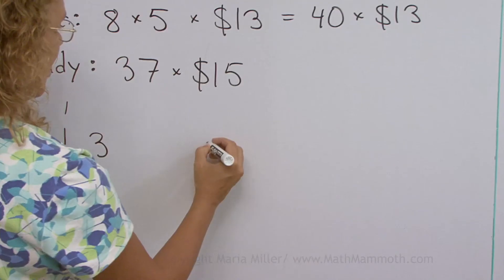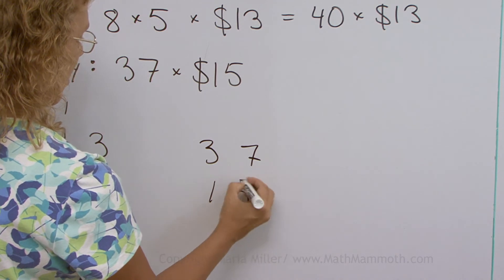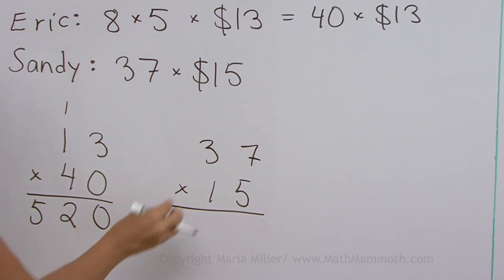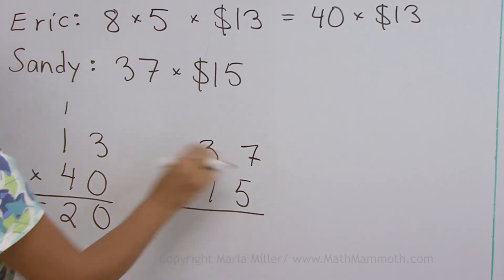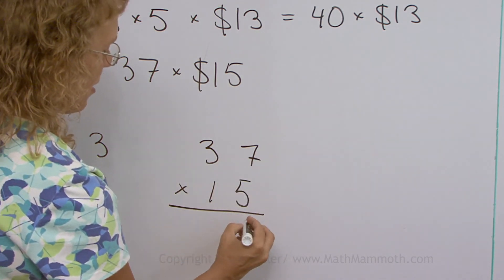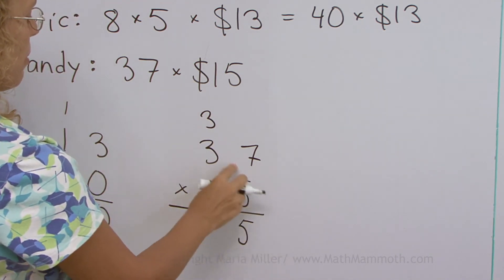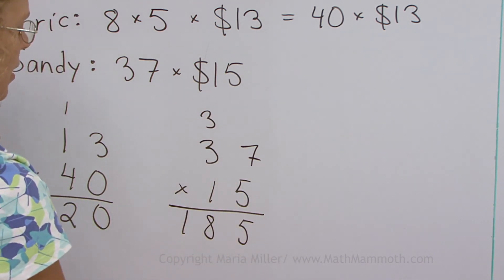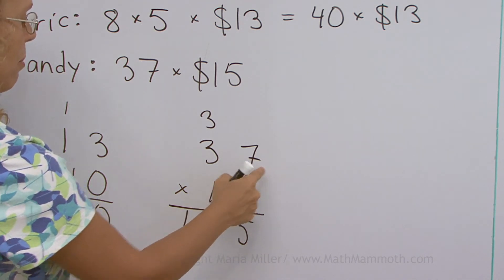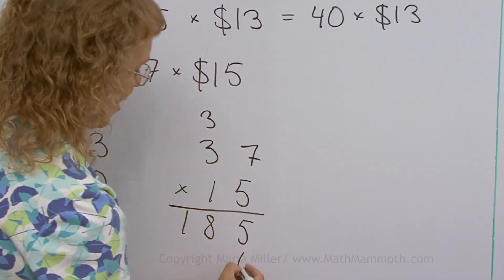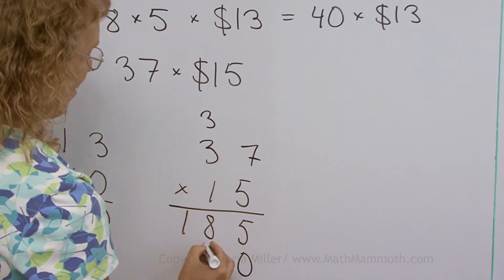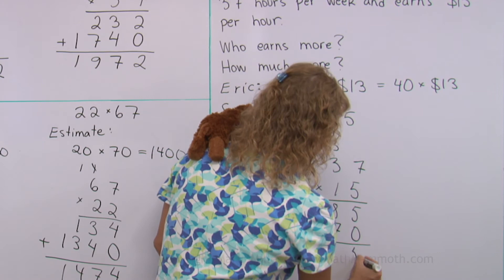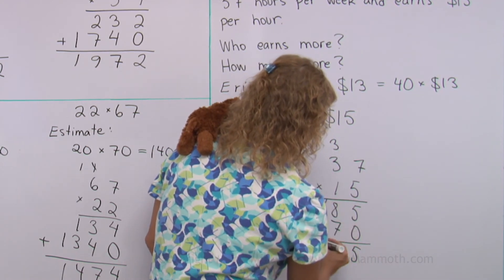The next one: 37 times 15. First, ignore the 1 — we go 5 times 37. 5 times 7, then 5 times 3 plus 3 is 18. And then 1 times 7 — but remember the zero. 1 times 7, 1 times 3. And add — 5, 5, 5.